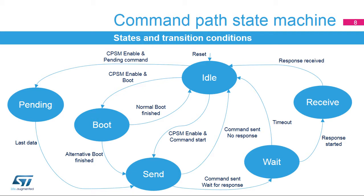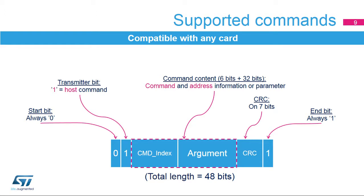When all data in the alternative boot mode has been received, the CPSM moves to the send state to terminate the boot phase by sending the CMD0 reset command. The SDMMC controller offers high flexibility for configuring the command indexes and arguments, with a flexible 32-bit register for arguments and an independent 6-bit field for the command index. This architecture ensures that the firmware can address any type of card. The Command Path State Machine is able to generate all command tokens with no restrictions on command index or argument. The start bit, transmitter bit, CRC, and end bit fields are automatically generated and sent on the bus.